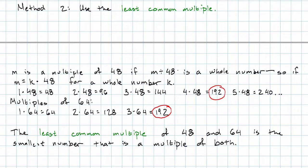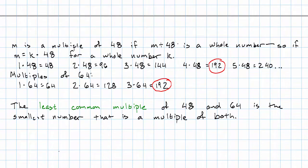192 is the least common multiple of 48 and 64. In general, the least common multiple of any two numbers is the smallest number that's a multiple of both. To find this, we can just make lists like we did above, or there's a method involving the prime factorization. I'll link to that in the comments on this video.